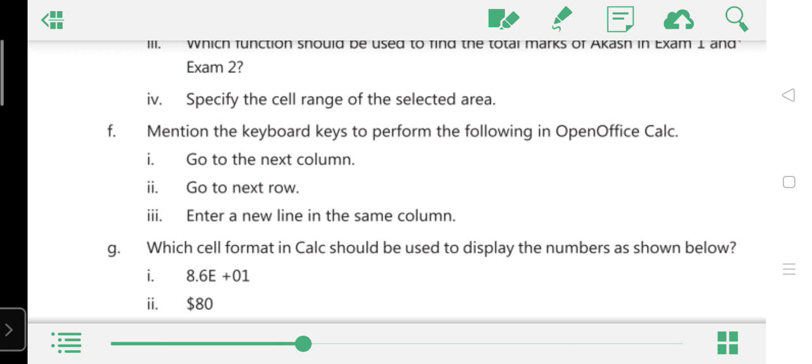Now G: which cell format in Calc should be used to display the number as shown below? First: 8.6e plus 01. What is the cell format? It's scientific. Write down first. And B: dollar 80. What is the cell? Yes, it's currency. First scientific, second currency.